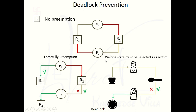By using these two things, we can forcefully preempt any process, but the condition is that the process must be in a waiting state. So we can break the no preemption condition — this is how we violate no preemption for deadlock prevention.